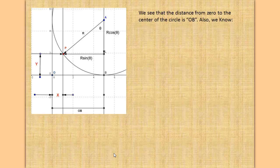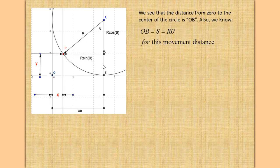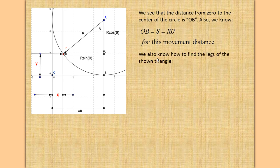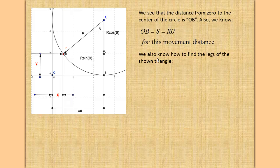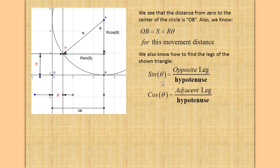We want to determine s for any movement from P to B. We started at zero and we moved some distance to point B. Now we want to know how far has P moved along that r. We see that the distance from zero to the center of the circle is OB. OB is equal to r times θ, because that's the distance P has moved since it left zero. We also know how to find the legs of the shown triangle from 9th grade, 10th grade trigonometry.